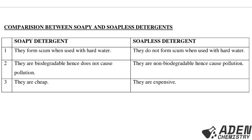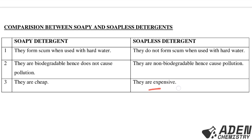Comparison between soapy and soapless detergents: First, soap detergents form scum when used with hard water, while soapless detergents do not form scum with hard water. Second, soap detergents are biodegradable and do not cause pollution, while soapless detergents are non-biodegradable and cause pollution. Third, soap detergents are cheap, while soapless detergents are expensive.